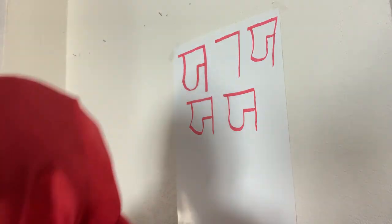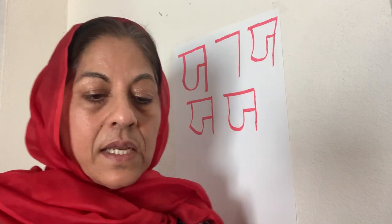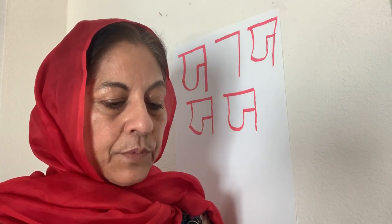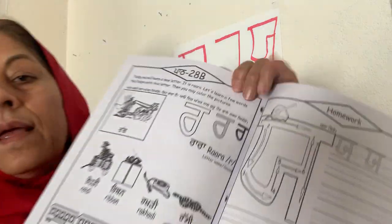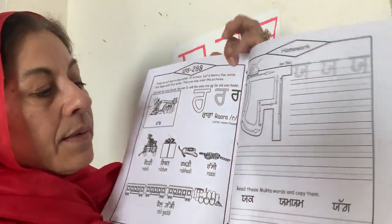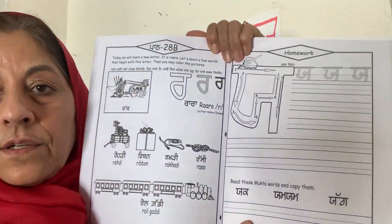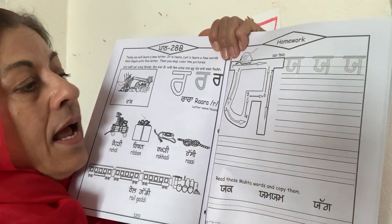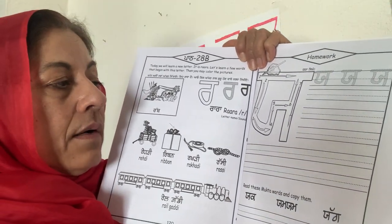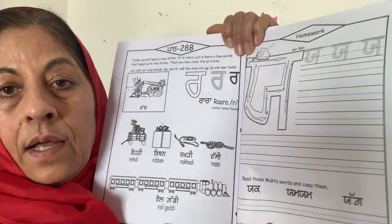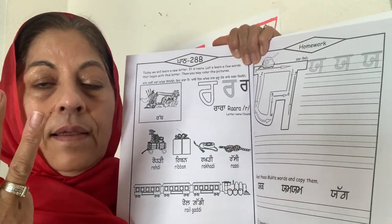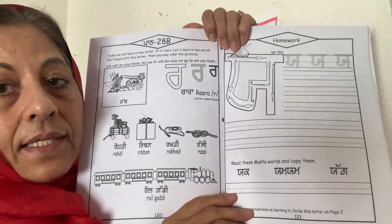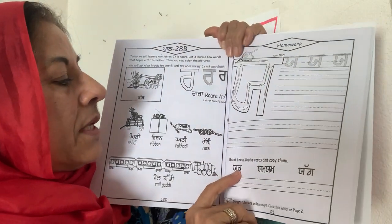So you are going to write so many Yayas at home, and you're going to become super, super good at it. We are coming to the end of the book almost — you have to write all the letters all the way up to Yaya, from Ura to Yaya, three times. Now if you are super, super, super excited, you can write even four times.